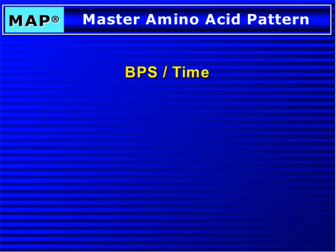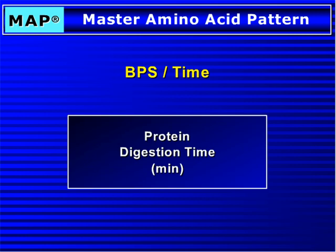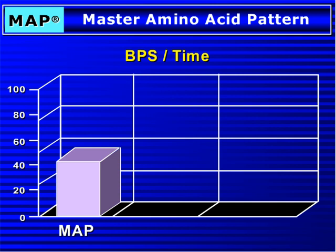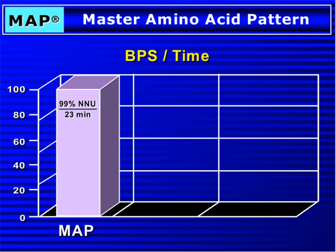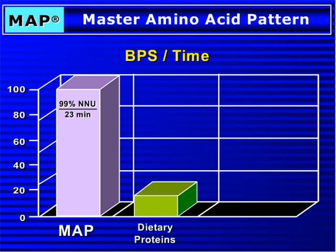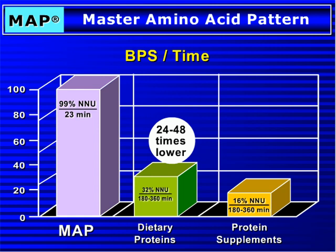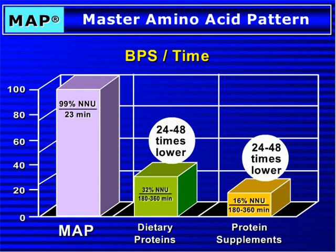Body Protein Synthesis Over Time Ratio. By knowing a protein's NNU and its digestion time, a protein's BPS over time ratio can be calculated. MAP's BPS over time ratio is equal to 99% NNU over 23 minutes. By comparison, the most nutritious dietary proteins have a ratio of 32% NNU over 180 to 360 minutes, meaning the BPS over time ratio of dietary proteins is 24 to 48 times lower compared to MAP. Meanwhile, protein supplements have a ratio of 16% NNU over 180 to 360 minutes, meaning their BPS over time ratio is 48 to 96 times lower compared to MAP.